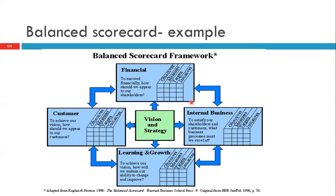Let us look at a small example of the Balanced Scorecard. It has four perspectives: financial, customer, learning and growth, and internal business. Each perspective is divided into four parts: objectives, measurements, targets, and initiatives.